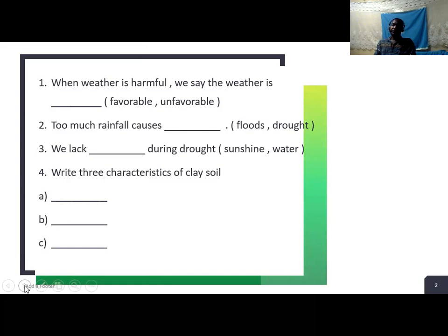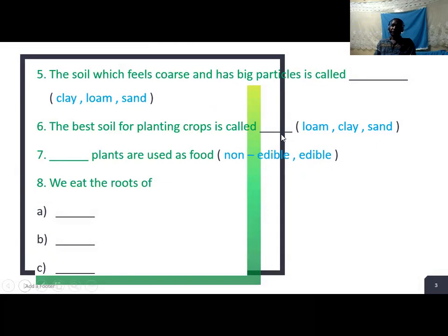Question 4. Write three characteristics of clay soil. Question 5. The soil which feels coarse and has green particles with gold - clay soil, loam soil, or sand soil. You pick the correct answer.